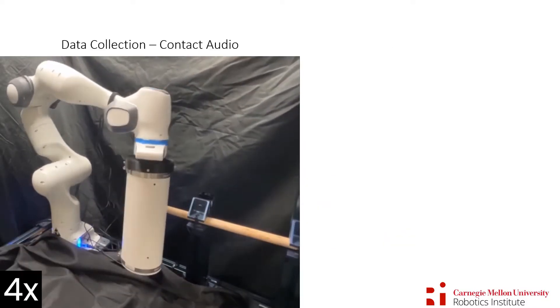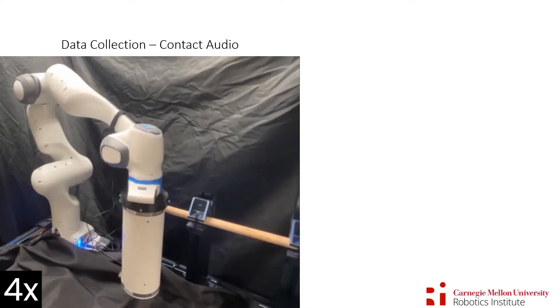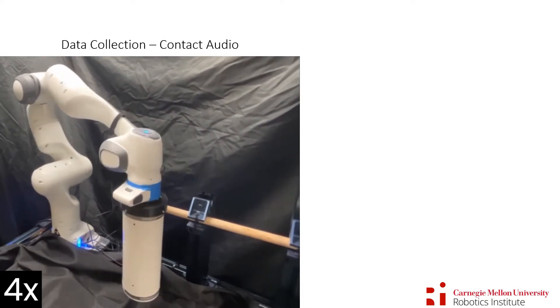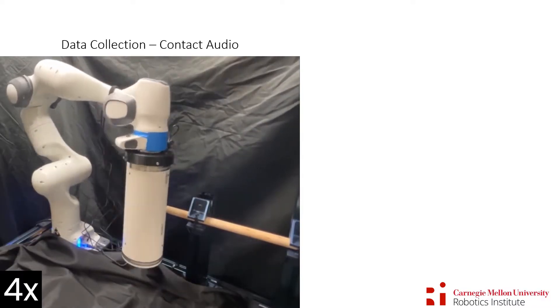To train our localization model, we attach the Sonic Boom end effector to the Franca robot to automate the data collection. The robot strikes the object to collect collision sounds on the entire surface of a cylinder.